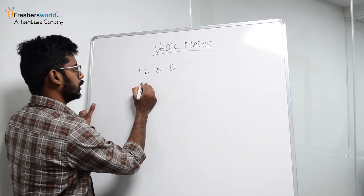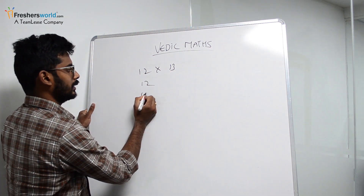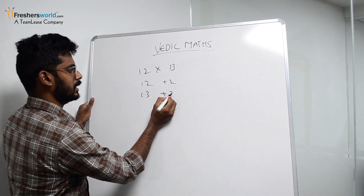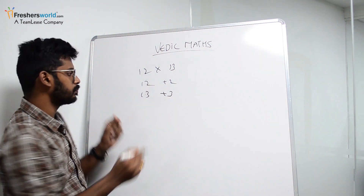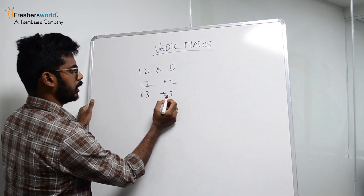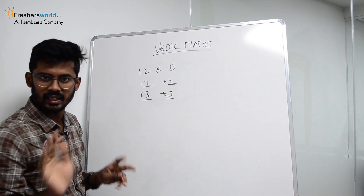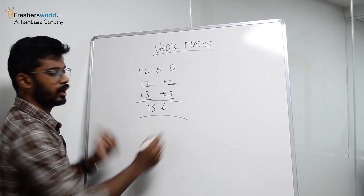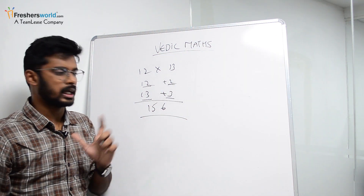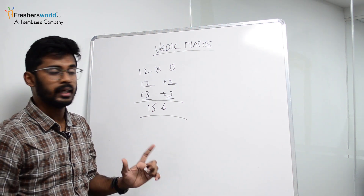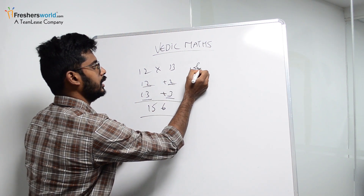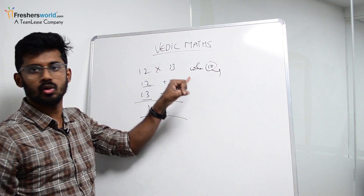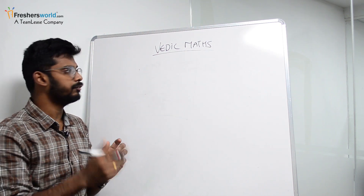Now let's see bigger numbers: 12 into 13. Write them vertically — plus 2 difference and plus 3 difference, both bigger than 10. So either 12 plus 3 or 13 plus 2 gives 15. Then 3 into 2 is 6. So 156 is the answer. That is how you do it when taking 10 as base — use this method when numbers are closer to 10.